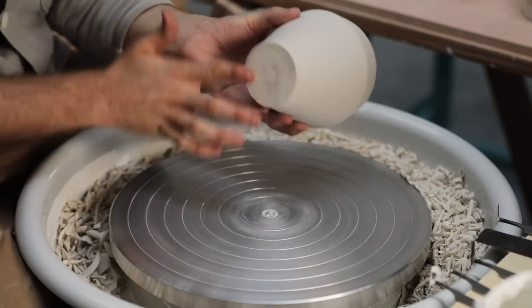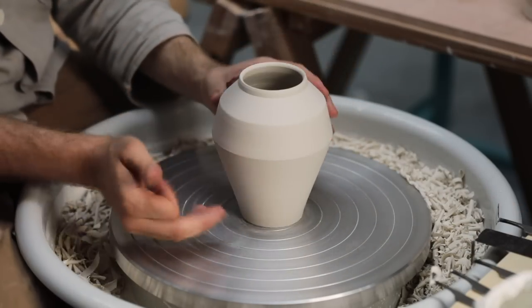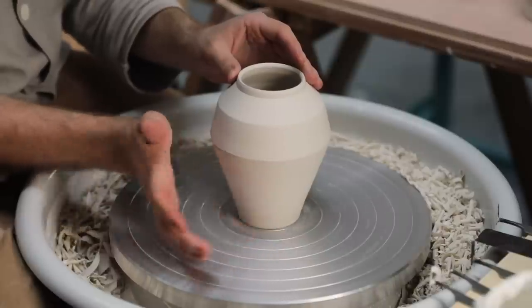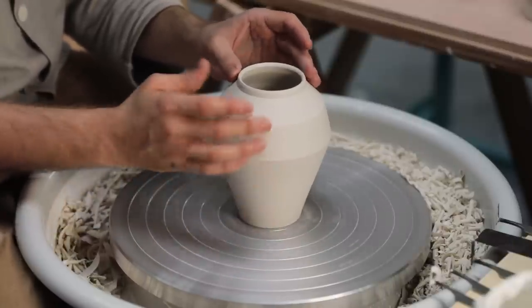To attach the vase down, I simply rub some water over the base, especially around the edge, and then place it onto the metal wheel head before tap centering it into the middle.